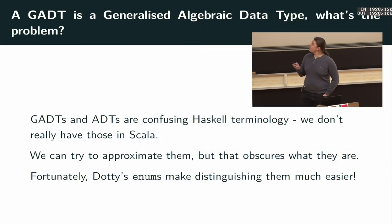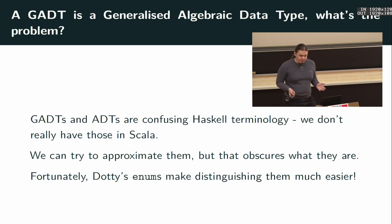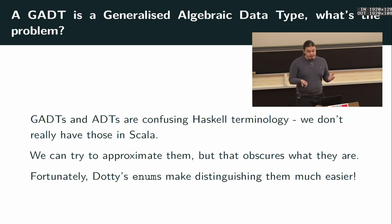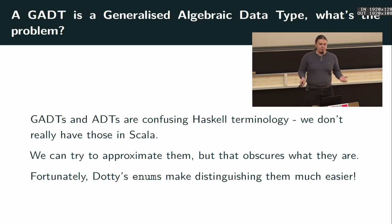But first things first. GADT is a Generalized Algebraic Data Type. The problem with the name is that this is essentially Haskell terminology that doesn't tell anyone unfamiliar with Haskell anything. It's also confusing for people that write Scala, because we don't actually have ADTs and GADTs. In Scala 2, we had sealed traits and case classes and case objects. And if we tried hard enough to convince ourselves, we could write something which we thought was an ADT or a GADT.